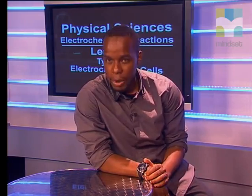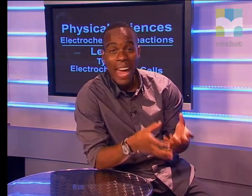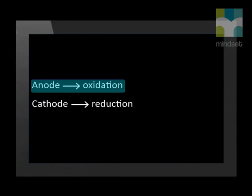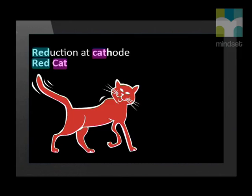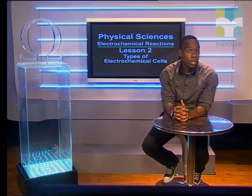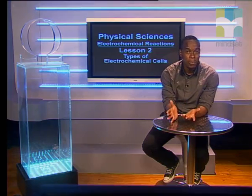So we understand the differences, but are there any similarities? Both types of cells contain electrodes where the oxidation and reduction reactions occur. Oxidation occurs at the electrode termed the anode, and reduction occurs at the electrode called the cathode. Here is a clever way to remember this: think of an ox, because oxidation takes place at the anode, and red cat, since reduction takes place at the cathode.